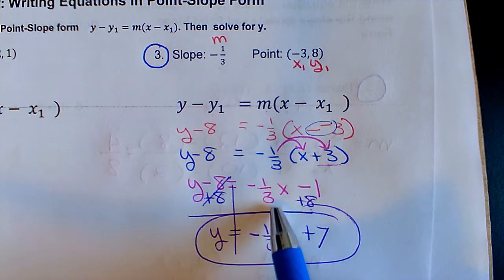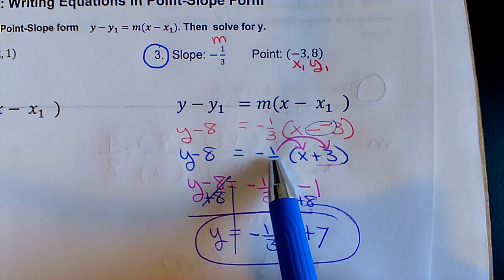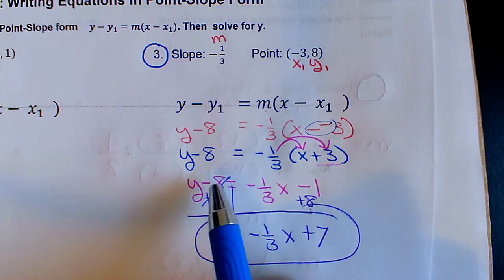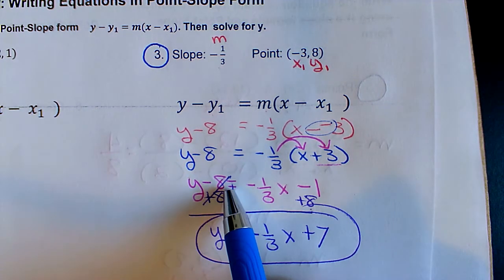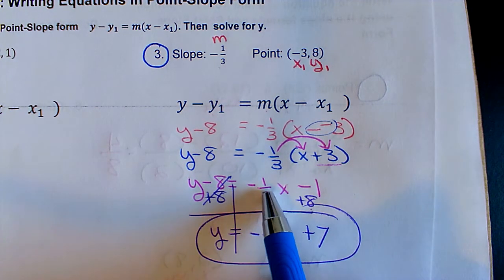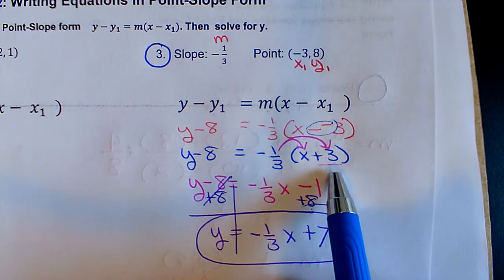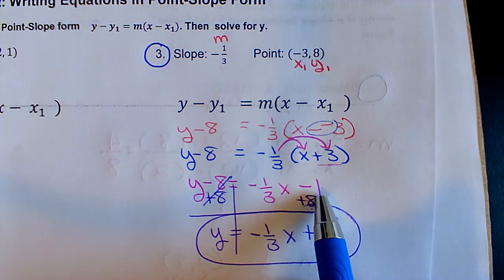Now that I've fixed all double negatives, I'm going to go ahead and do the distribution step. So multiplying the negative 1/3 to each of the numbers inside, I would still have y minus 8 equals negative 1/3 times x was negative 1/3x, and negative 1/3 times 3 was how I got negative 1.